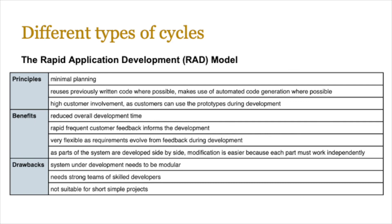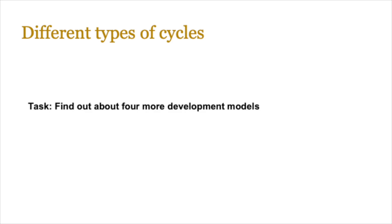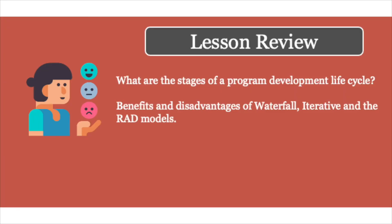Your task: you've looked at the development life cycle and a few additional models. Search online and discover four more development models used in the software industry. Do a comparison of their pros and cons to understand how and why they're used. That's the end of the lesson — you should now be familiar with the stages of the program development life cycle, the benefits and disadvantages of the waterfall, iterative, and RAD models. In exams, you may be asked to compare these models and explain how they impact software development.